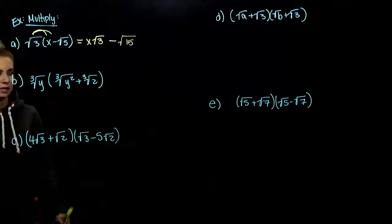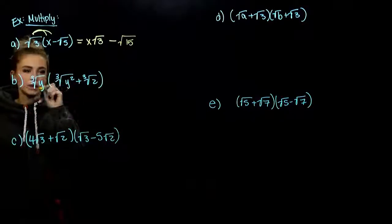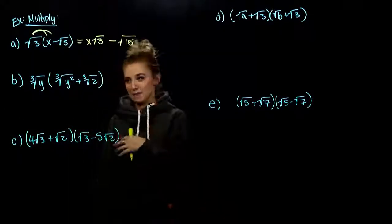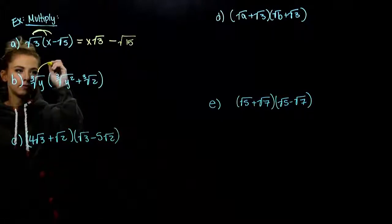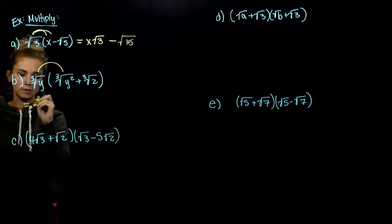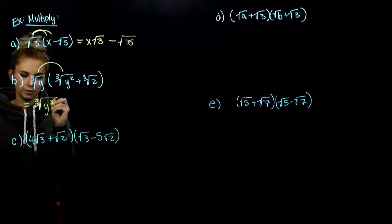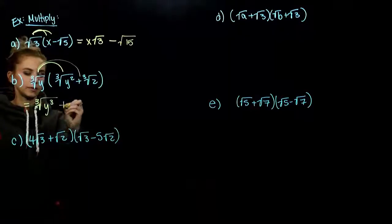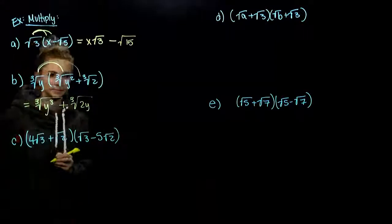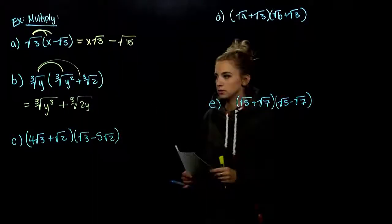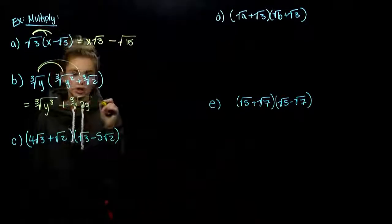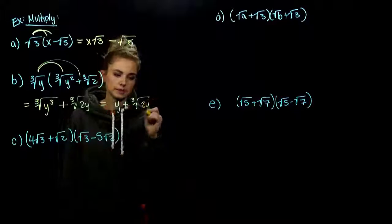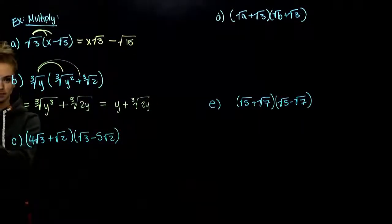For Part B, same story — same index everywhere, non-negative radicands. The third root of y times the third root of y squared gives the third root of y to the third power. Then the third root of 2y. Can we simplify either? The first one: the cubed root of y cubed is just y. The second one: 2y is not a perfect cube, so we can't simplify that further.